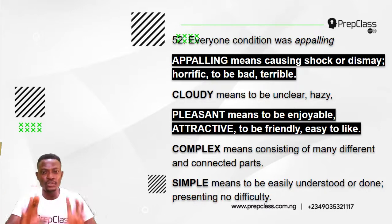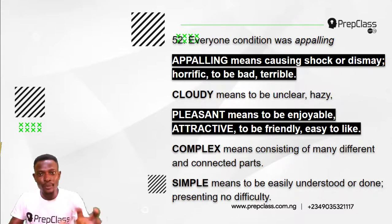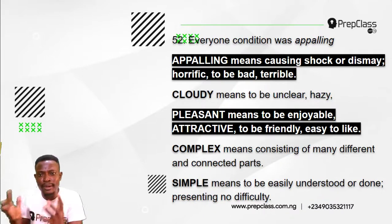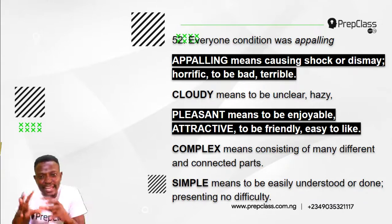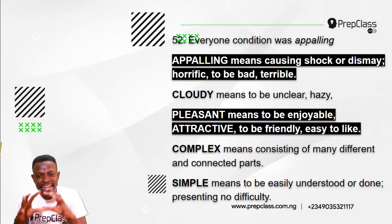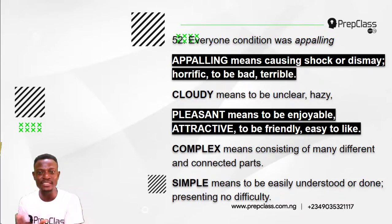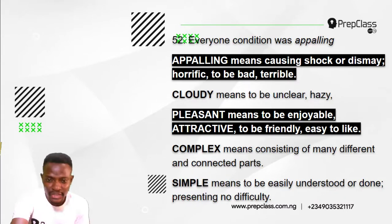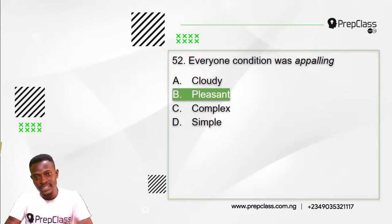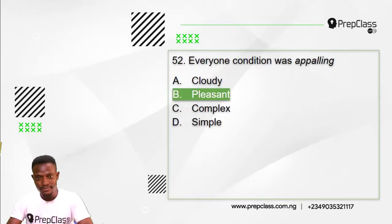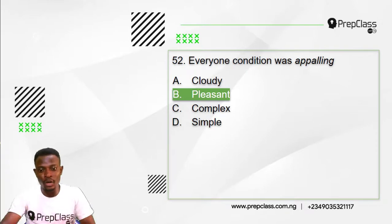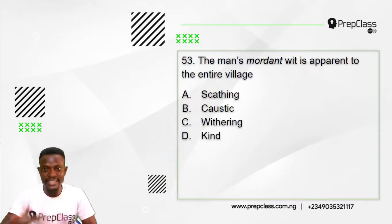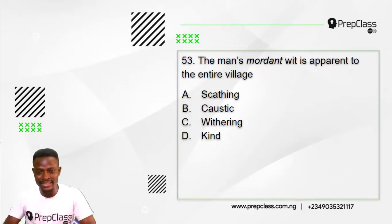So the answer to question 52 is option B: pleasant. 'Appalling' means causing shock or dismay — to be horrific, bad and terrible — while 'pleasant' means to be enjoyable, attractive, friendly, and easy to like. The opposite meaning to 'appalling' is 'pleasant.'